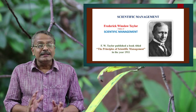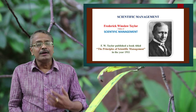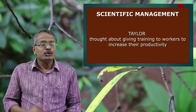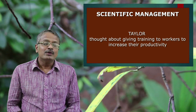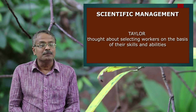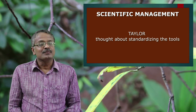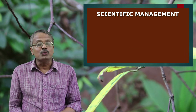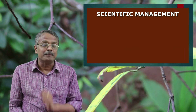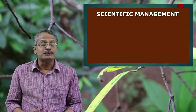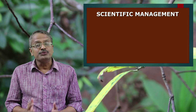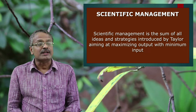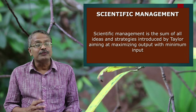His ideas were quite revolutionary at that time. He thought about minimizing the efforts of workers through proper planning, giving training to workers, selecting workers on the basis of skills and abilities, standardizing tools, and giving higher wages to efficient workers to motivate them. Consolidation of these ideas can be called scientific management — the sum of all ideas and strategies introduced by Taylor, aiming at maximizing output with minimum input.